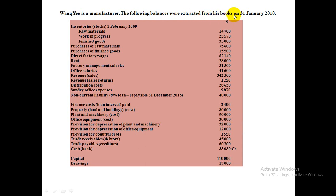The following balances were extracted from his books on 31st January 2010. Inventories on 1st February 2009 include Work in Progress and Finished Goods. Purchases of Raw Materials, Direct Factory Wages (Direct Labor), Rent, Factory Management Salaries, Office Salaries, Revenue from Sales, Sales Returns, Distribution Cost, Sundry Office Expenses, and an 8% Non-Current Liability Loan are all given. The interest percentage on the loan will be calculated from this information.